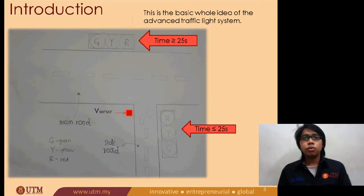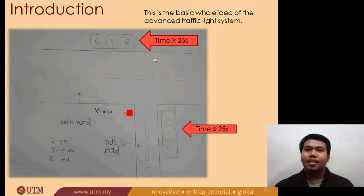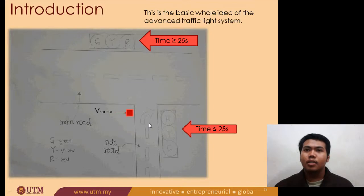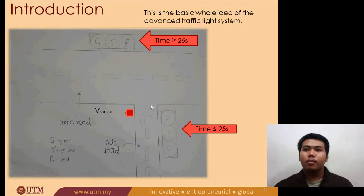Next, we will proceed to the introduction and I will pass to Zikri for the next presentation. Assalamualaikum warahmatullahi wabarakatuh. Thanks to Faiz. Now I will show you the basic whole idea of the advanced traffic light system. If you can see the slides, there are main roads and side streets. Usually there are more vehicles at the main roads compared to the side street, so the green light at the main road should have a longer period of time compared to the side street.